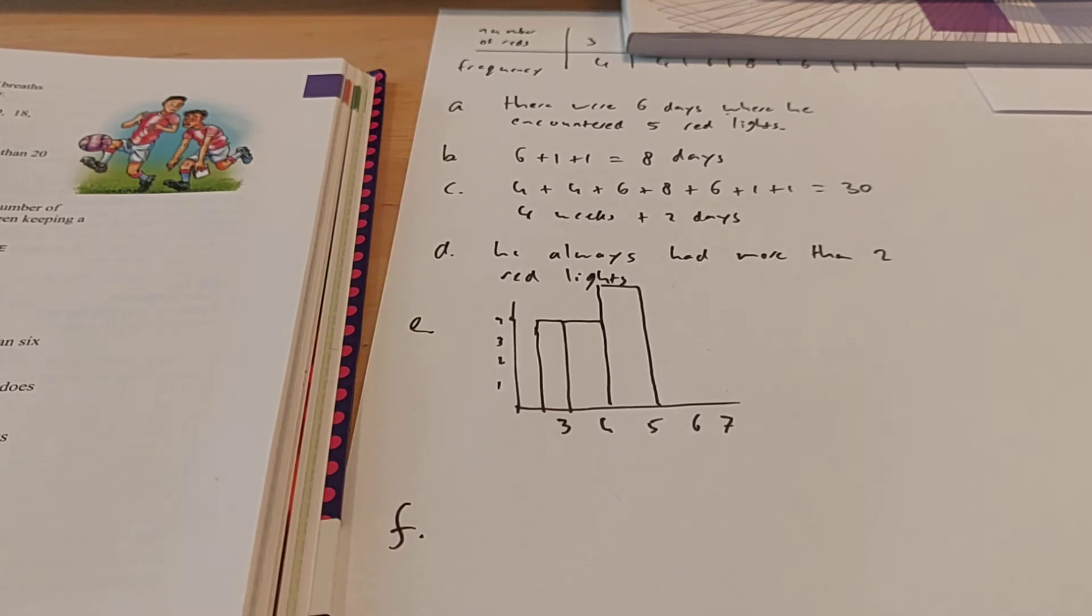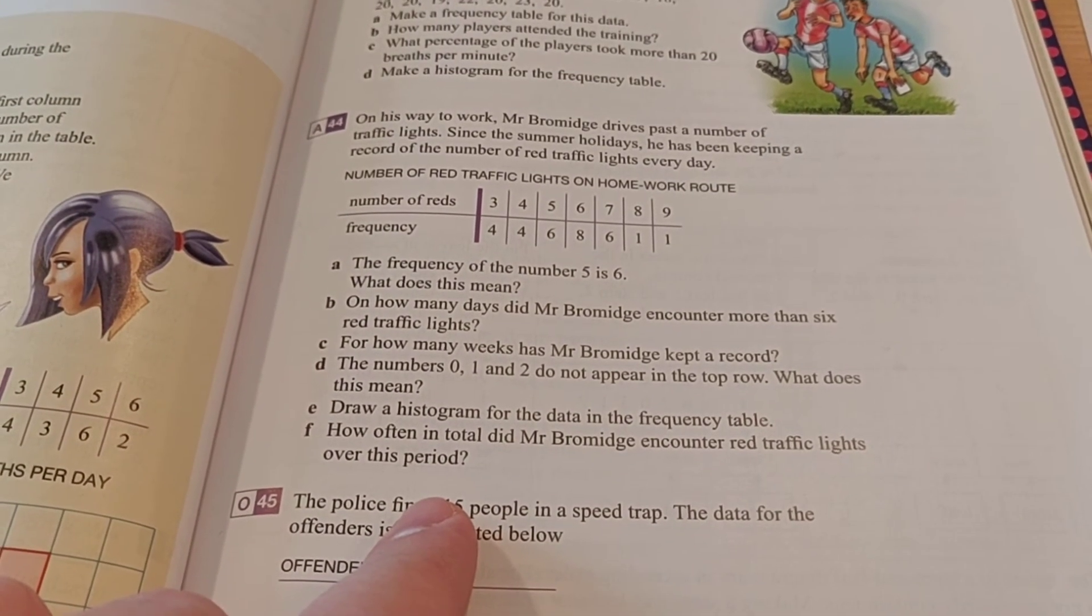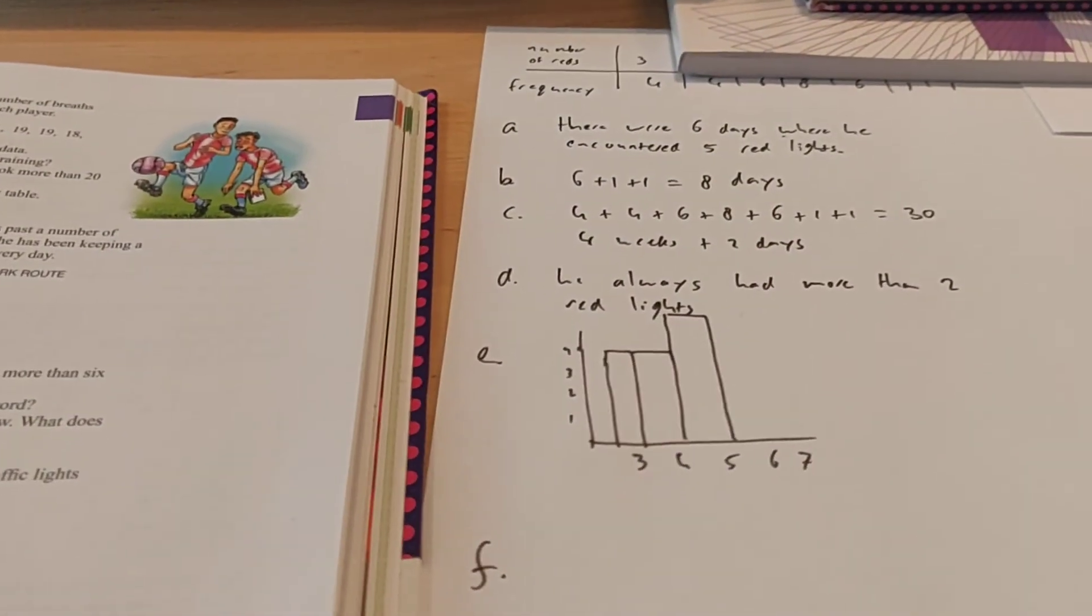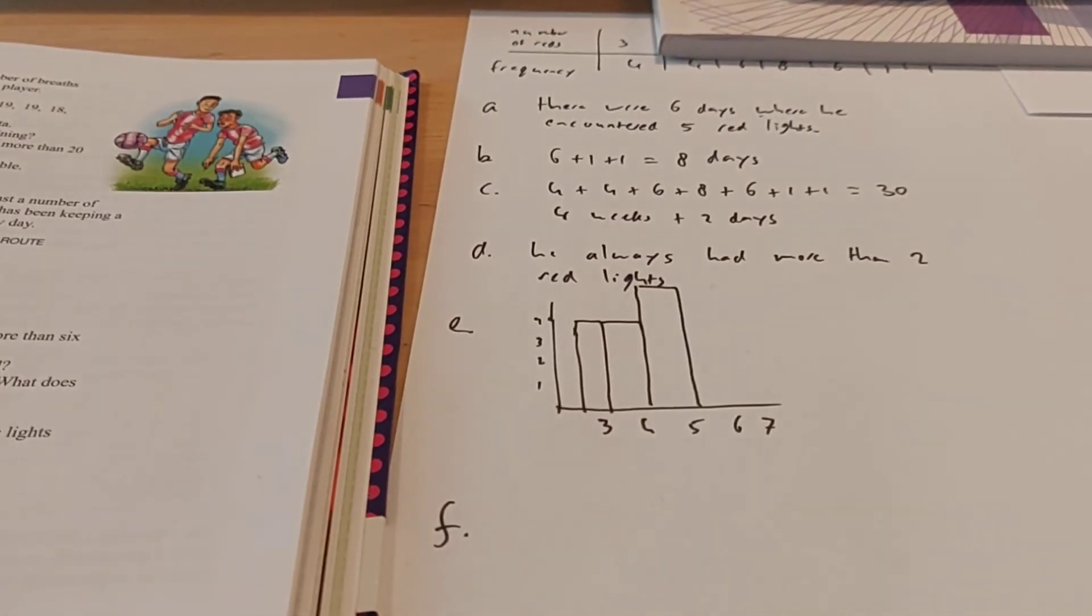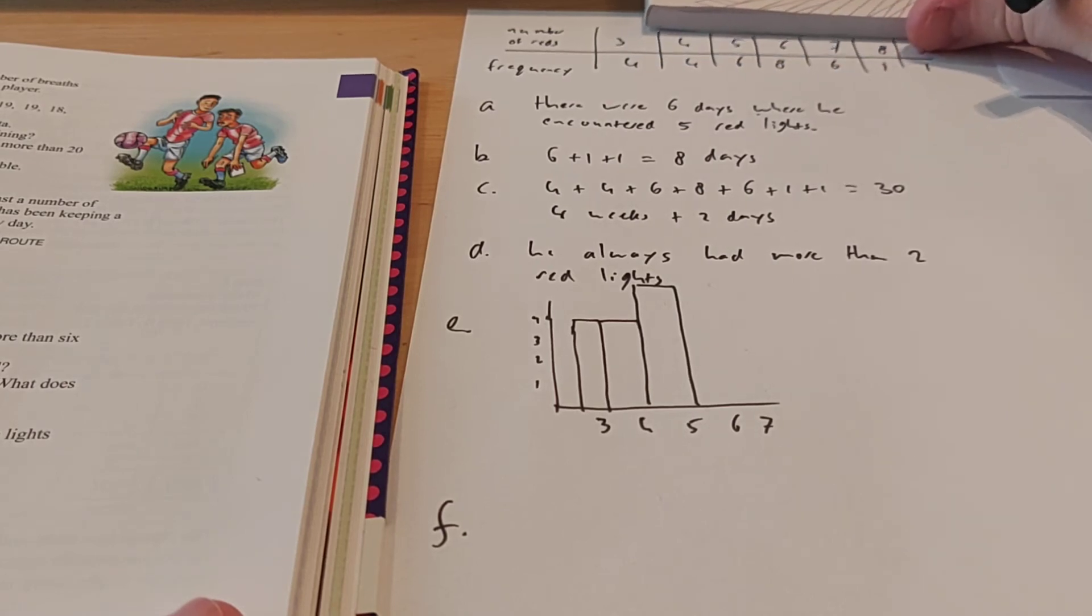And then we're going to go to F. It says, how often did Mr. Bromwich encounter red traffic lights over this period? Okay, so you want to know how many red lights did he have in total? If I move this book over here, then you can see the table again.